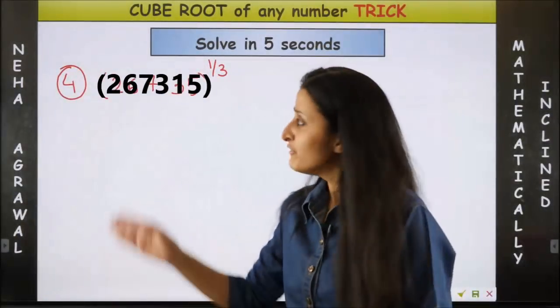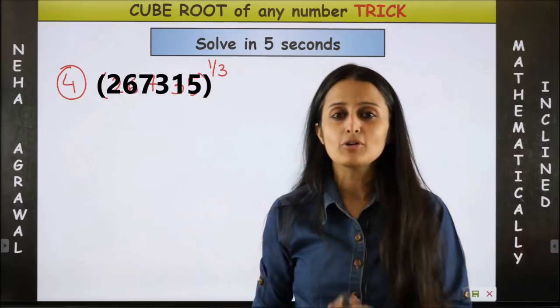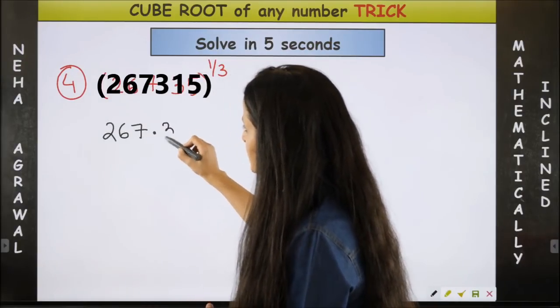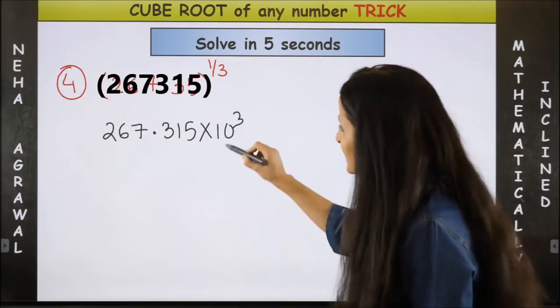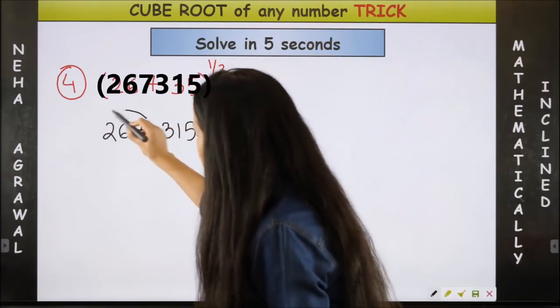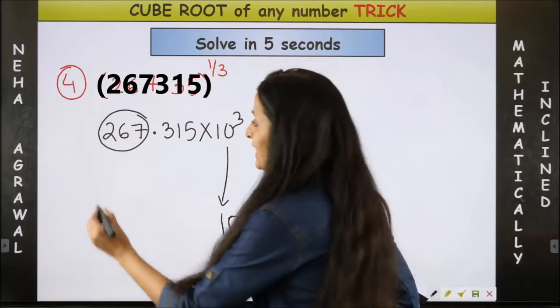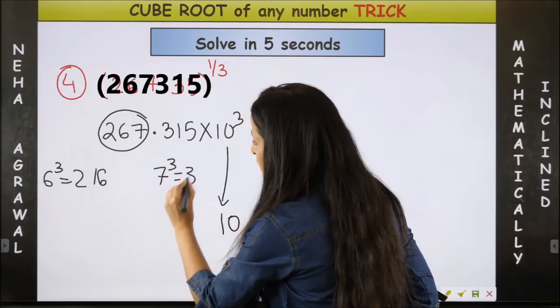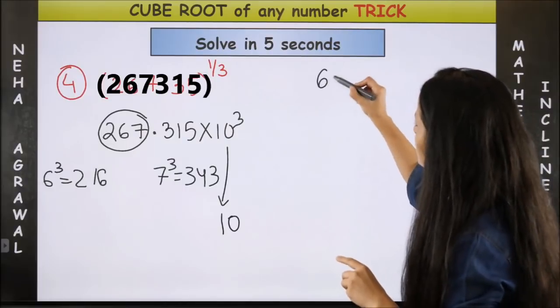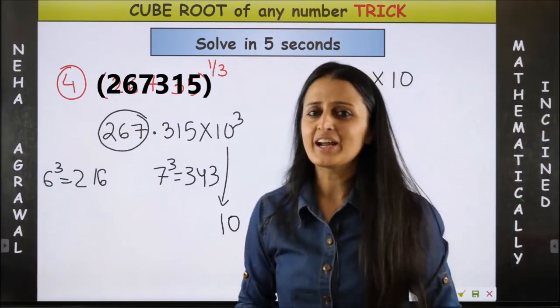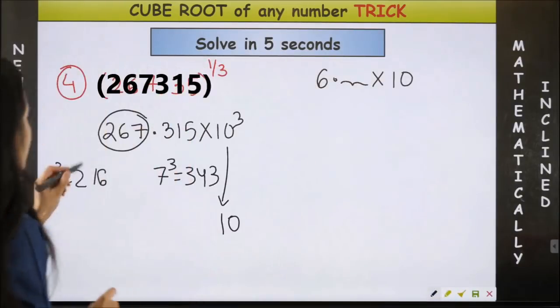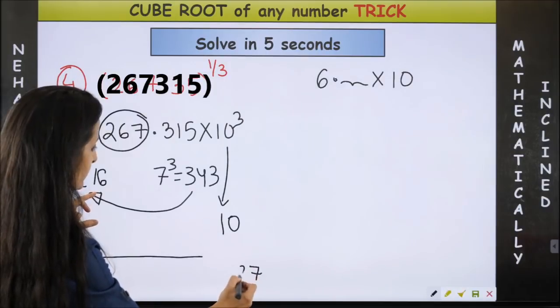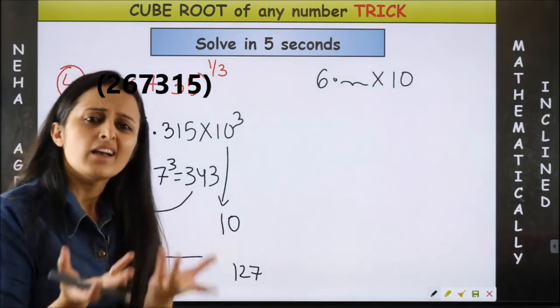Ma'am, seriously, we will be applying the same trick on a six-digit number also? Well, you will find that yourself. So again the same technique: you can write it as 267.315 into 10 cube. Now just watch this one carefully. It's simple to find out that it lies between 6 cube, which is 216, and 7 cube, which is 343. So I know my answer is going to be 6 point something into 10. Now let's figure out what's that 6 point something. So here again, 343 minus 216, which is going to roughly give us 127. Now take its 90 percent, approximately 120.